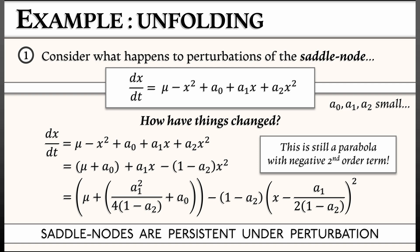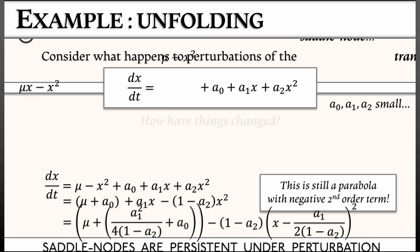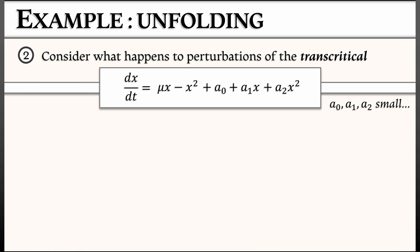Now, what happens if we do this to a transcritical bifurcation? So I'm going to take that normal form, μx - x², and I'm going to add some perturbation, a₀, a₁x, a₂x². Now, how have things changed when these parameters are really, really small? Again, I'm going to sort terms out by degree. I get a₀ and then (μ + a₁) times x and then minus quantity (1 - a₂)x². Great.